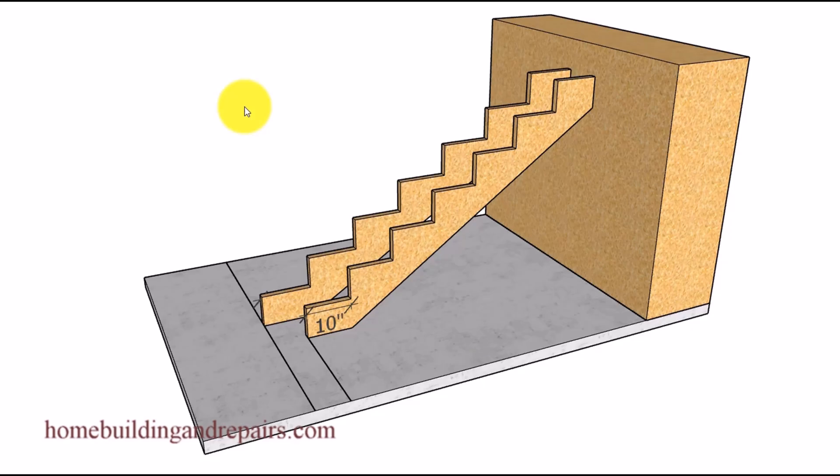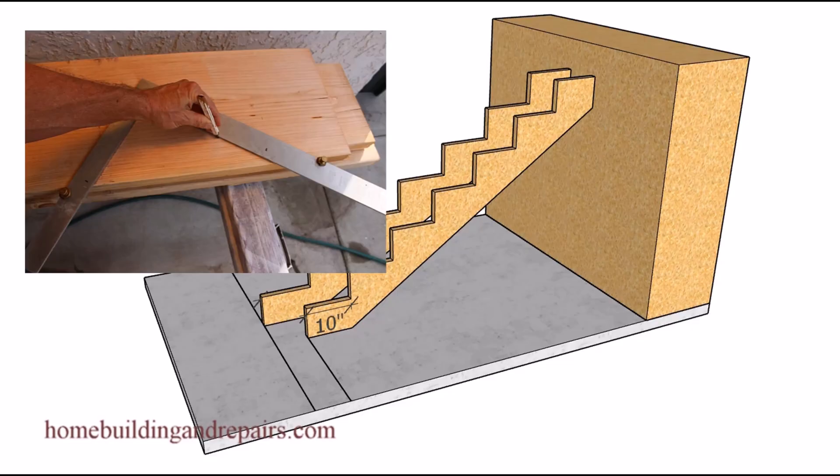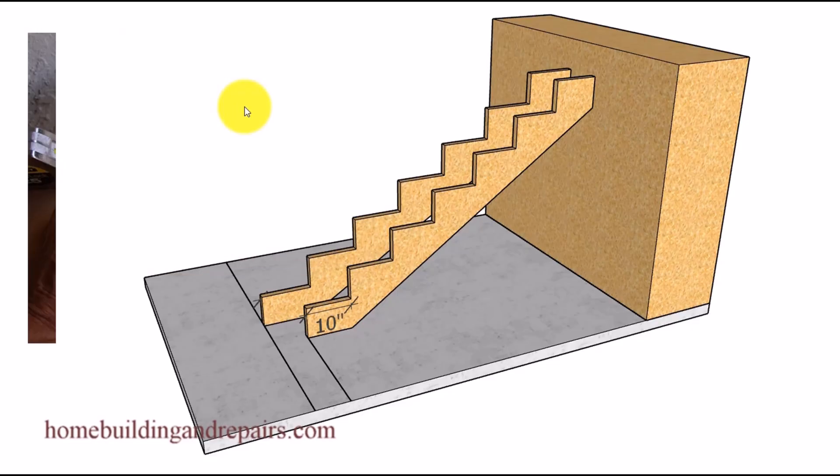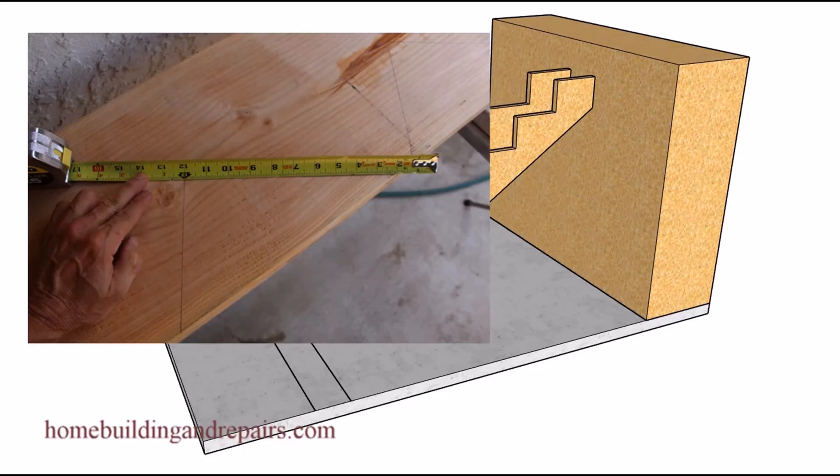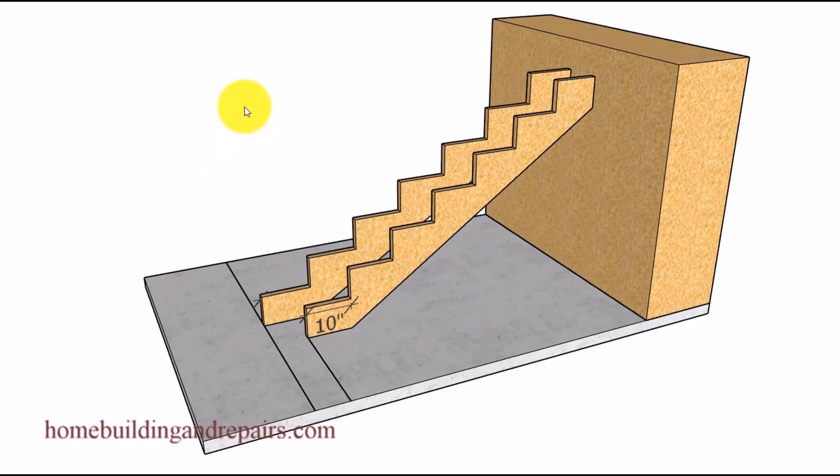In this video I will be showing you what happens if you add the one inch overhang measurement or the measurement for your nosing to the stair tread layout measurement when you are laying out your stair stringer.